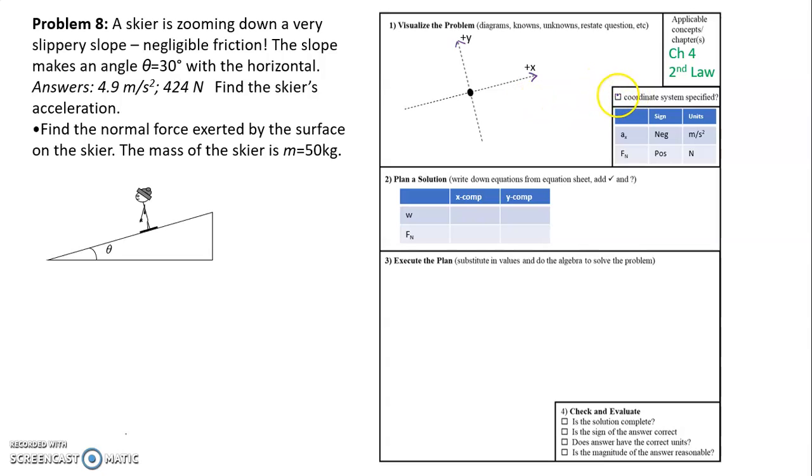All right, so we've got our coordinate system defined. We're going to be looking for acceleration. Now, as the skier moves down the slope, they're not moving at all in the y direction. And so a sub y is going to be zero because vy is constant. vy is going to be a constant value of zero. So the acceleration that they asked us for, that acceleration is a sub x.